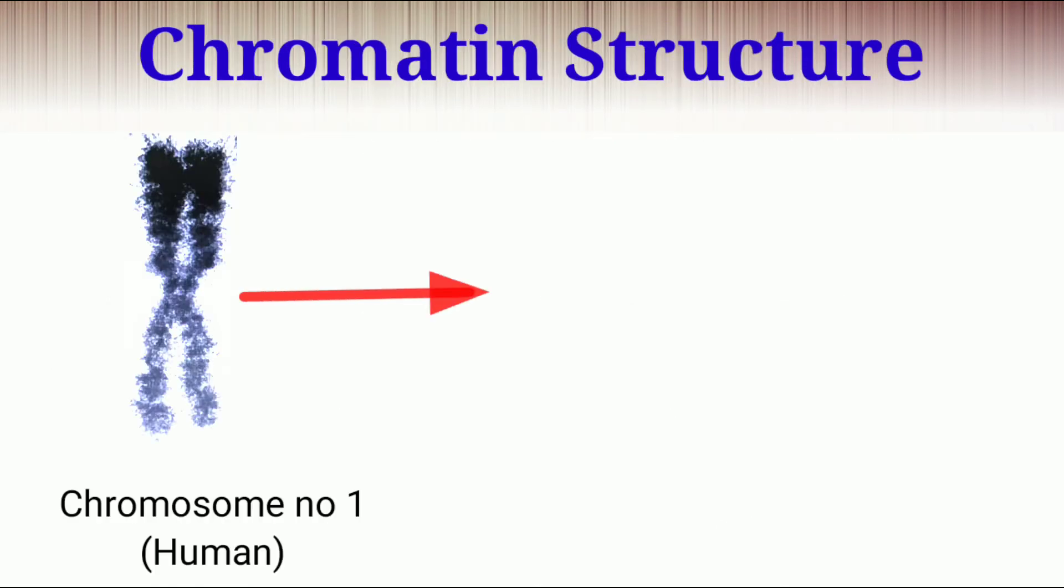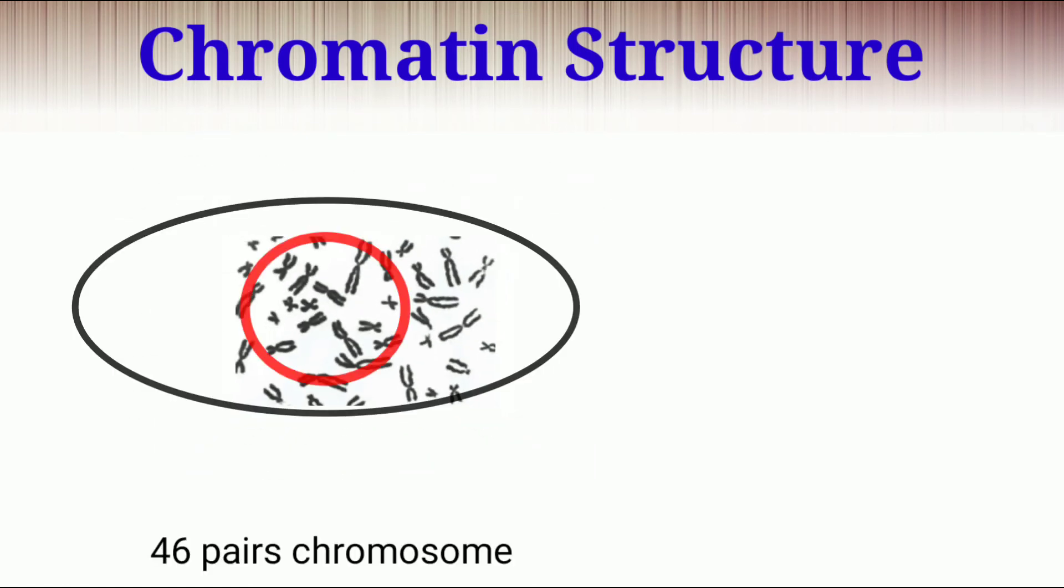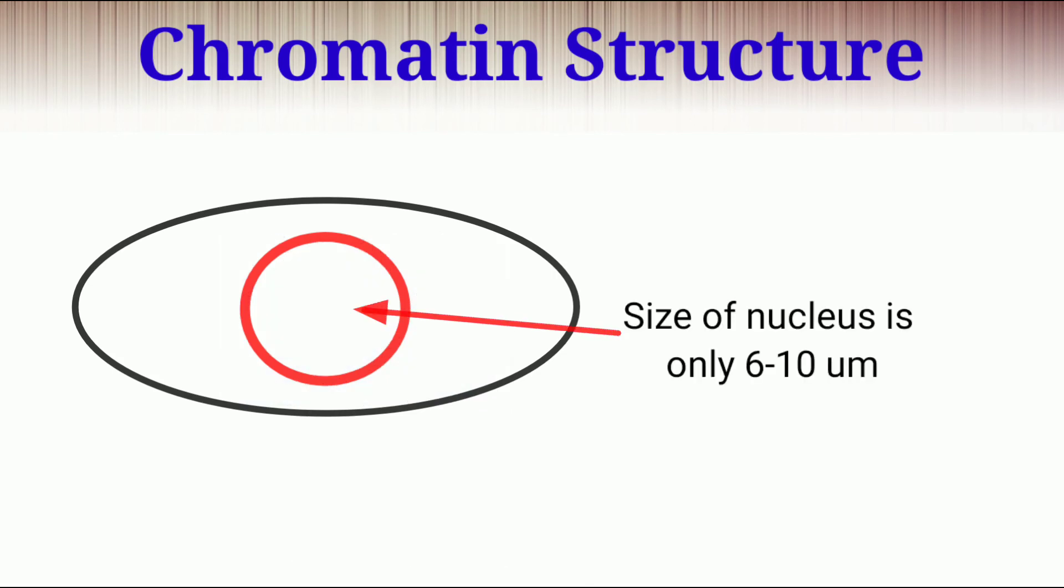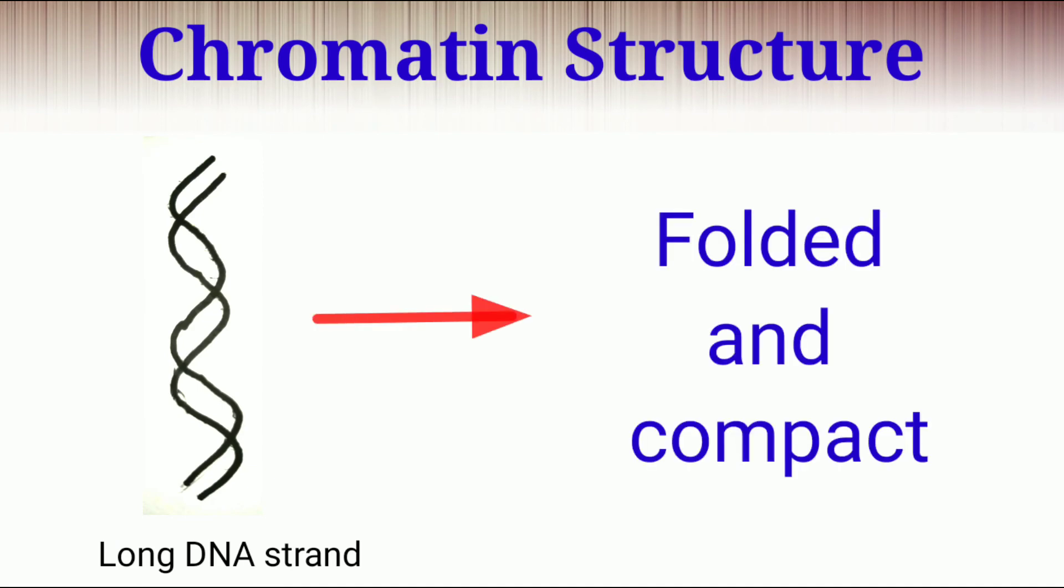Imagine chromosome number one of human is 249 into 10 to the power 6 base pair. So it is around 8.5 cm long. Then how can 46 chromosomes fit into a nucleus that is only 6 to 10 micron in size? In order to fit into this compartment, DNA is compacted gradually.